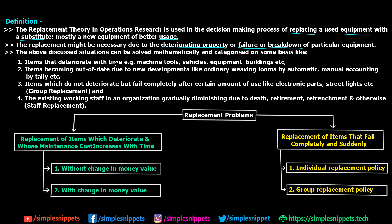Type one is items that deteriorate with time — examples include machine tools, vehicles, equipment, and buildings. Type two is items that become out of date due to new developments. For example, a new version of a car, machine, or software makes the older one obsolete. Manual things like ordinary weaving looms are going to be replaced by automatic ones, and so on.